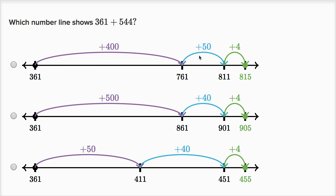So this one starts by adding 400, and then 50, and then four. It's adding 454, not 544.